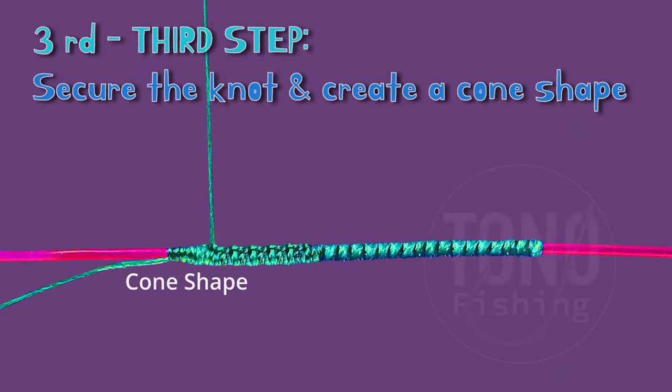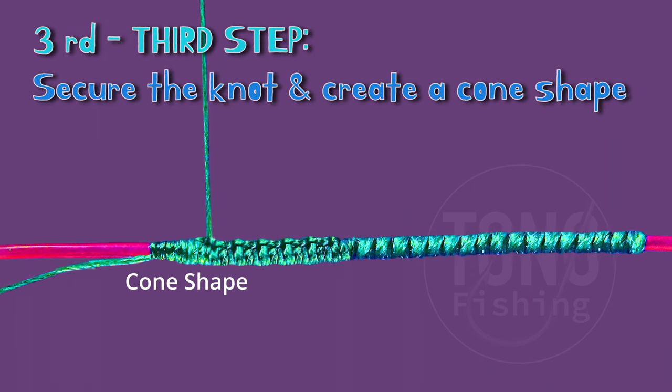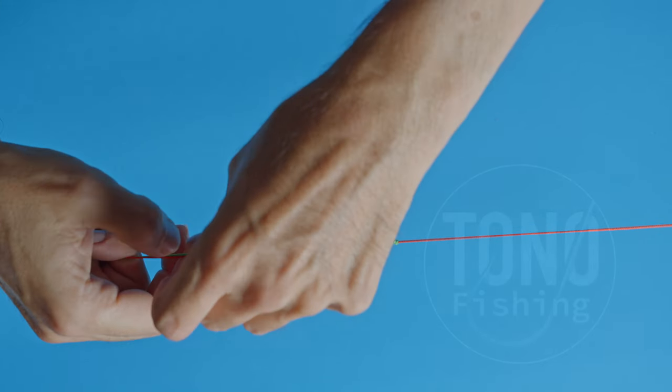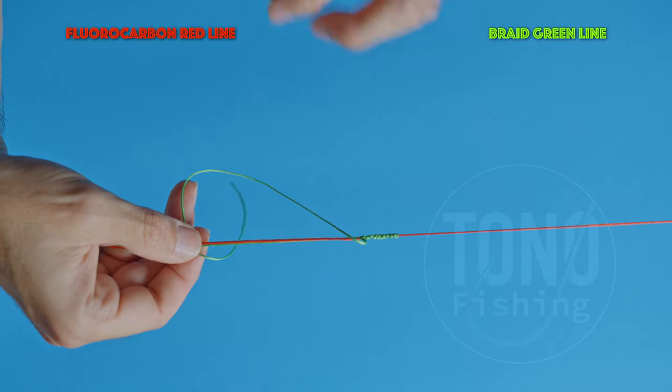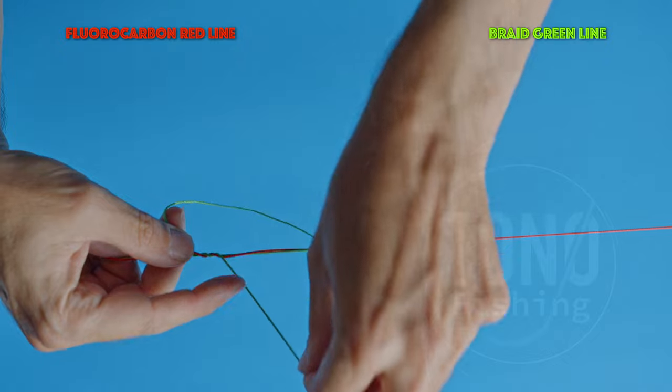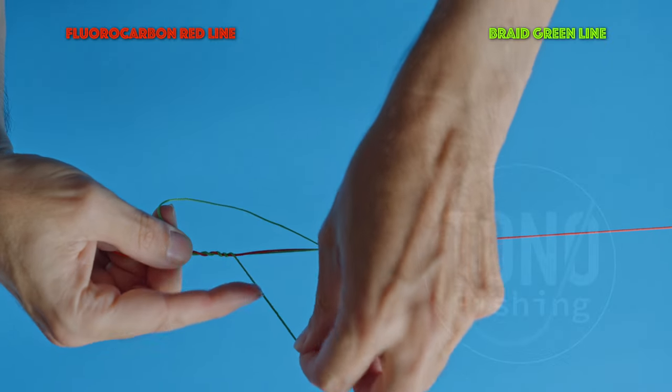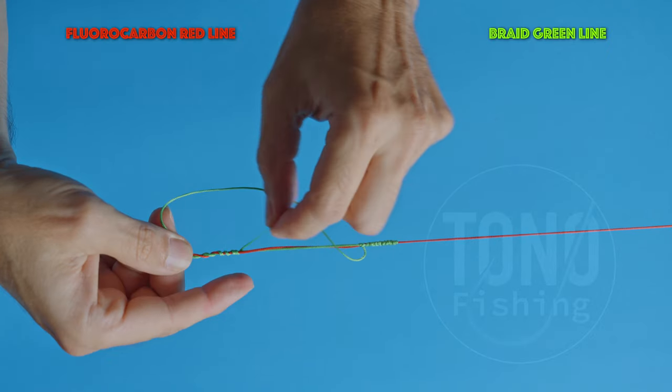Third and last step: ending the knot, creating a cone shape. This small cone shape will help the knot pass through the rod guides, especially the tip one. Begin by wrapping the braid tail around both lines, the fluorocarbon tail together with the braid line coming from your rod. You'll want to complete 7 turns, and be sure to leave a small braid loop. These turns should be made from top to bottom, clockwise when looking from the ceiling to the floor.